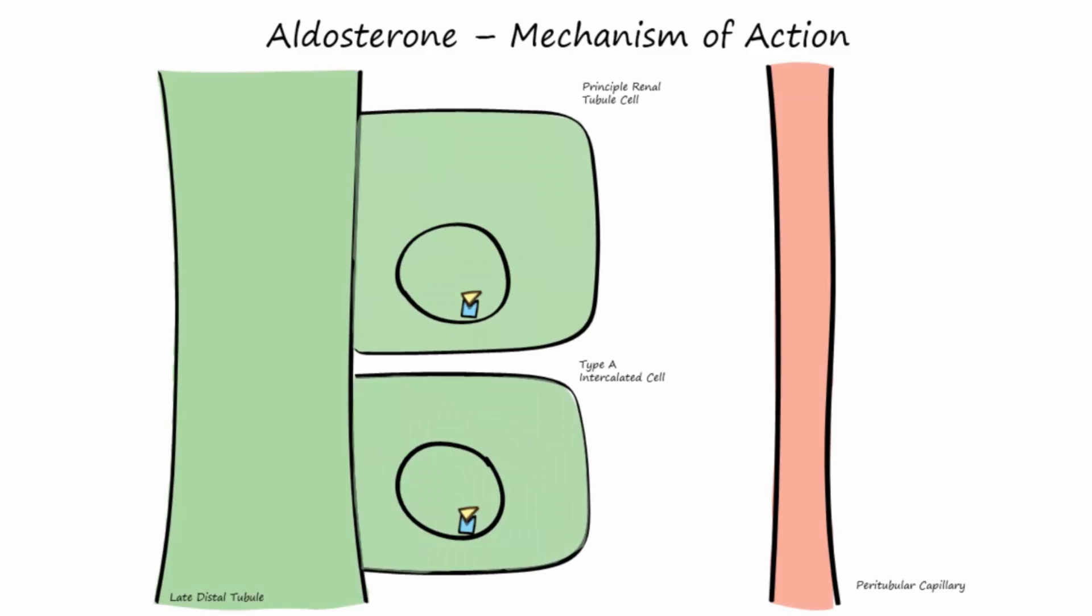Once inside the nucleus of the cell, it upregulates the transcription of certain segments of DNA into mRNA. The mRNA leaves the nucleus through nuclear pores, and in the cytoplasm is translated on ribosomes into proteins that allow for more sodium reabsorption and potassium and hydrogen secretion.